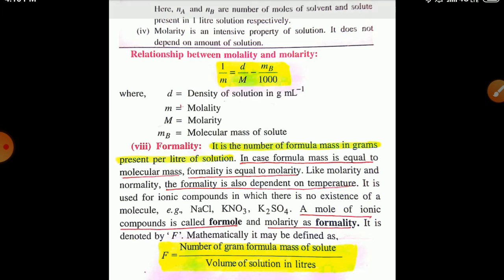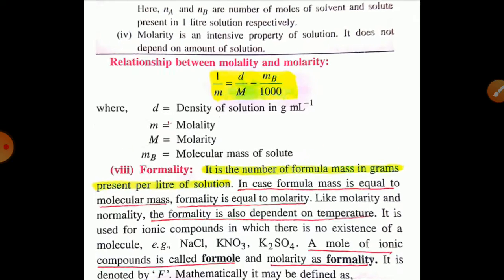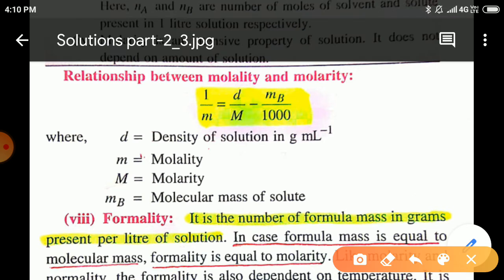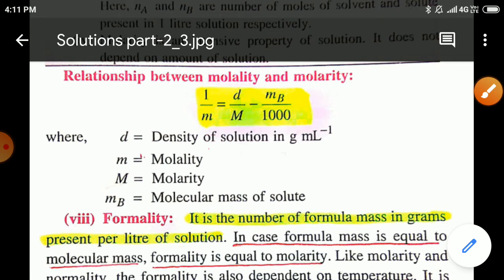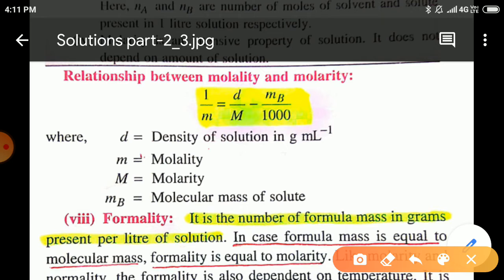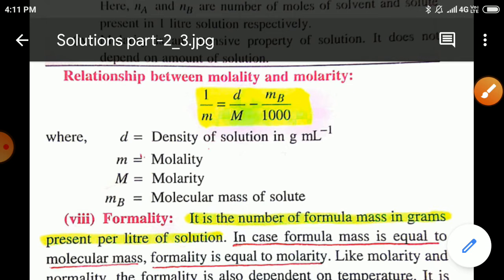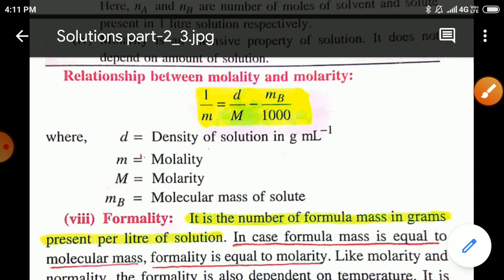Now, the relation between molarity and molality: molality is represented by small m, and molarity by capital M. The relation between molality and molarity is: 1/m = D/M − Mb/1000. Here D is the density of solution, capital M is the molarity, small m is the molality, and Mb is the molecular mass of the solute.